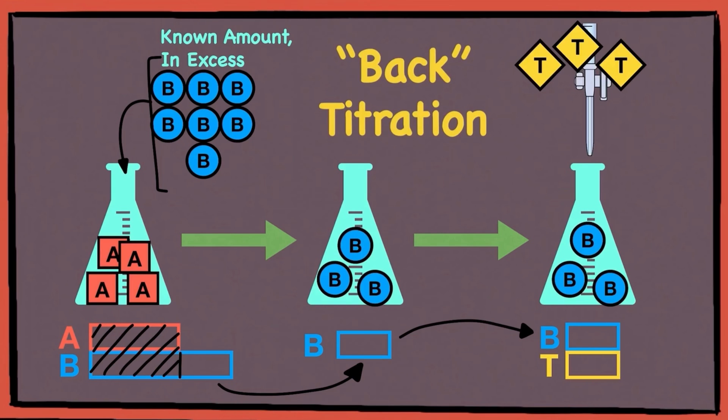As the word back in back titration suggests, it means that your job is to work backwards to find the amount, volume or mass depending on the question of A. To do this, let me introduce you to the model method.